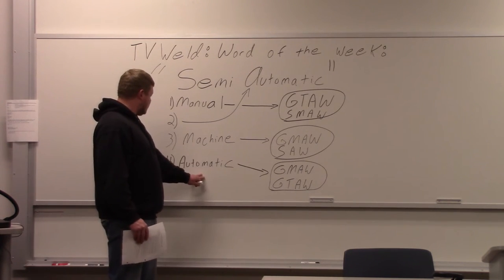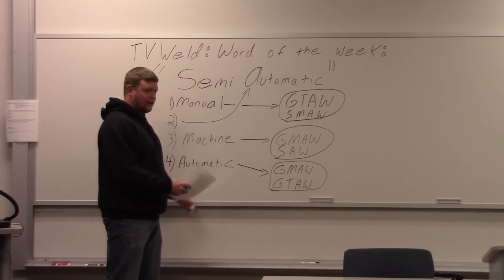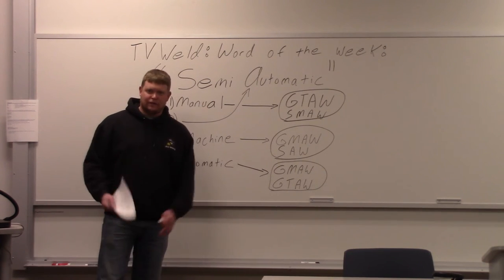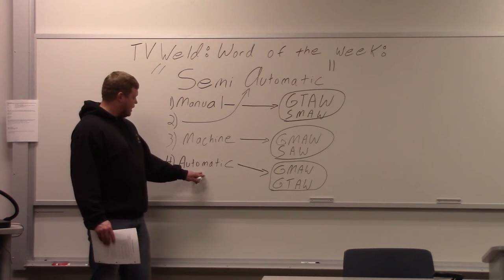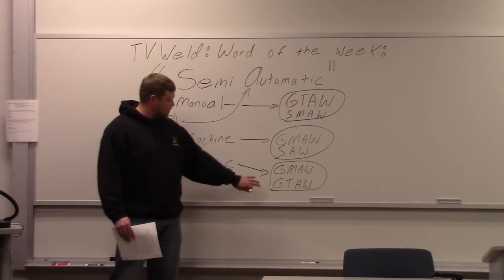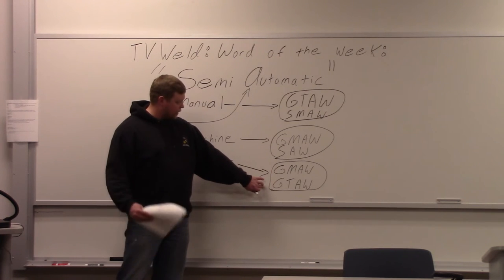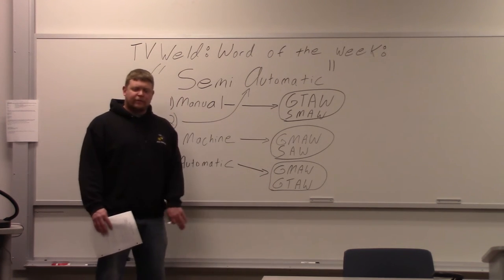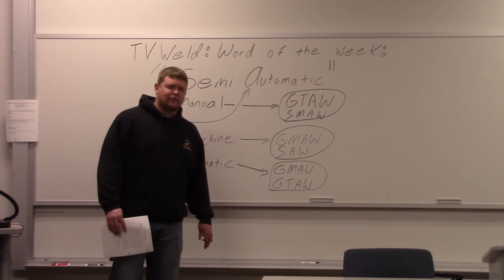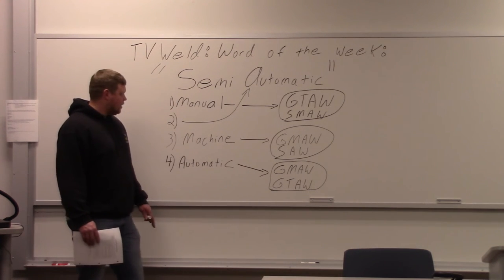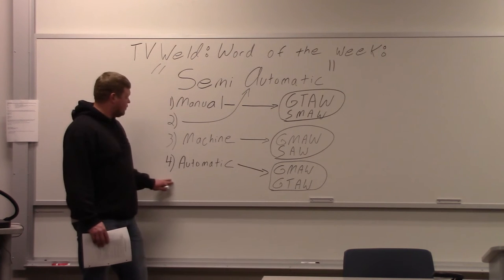Last but not least, automatic. The welder — meaning the human being — does nothing. This is fully automatic. Different processes that use this: gas metal arc welding and gas tungsten arc welding are primarily used. You could hook up a flux core, though I'm not sure if they do that frequently. MIG and TIG are commonly used for automatic.